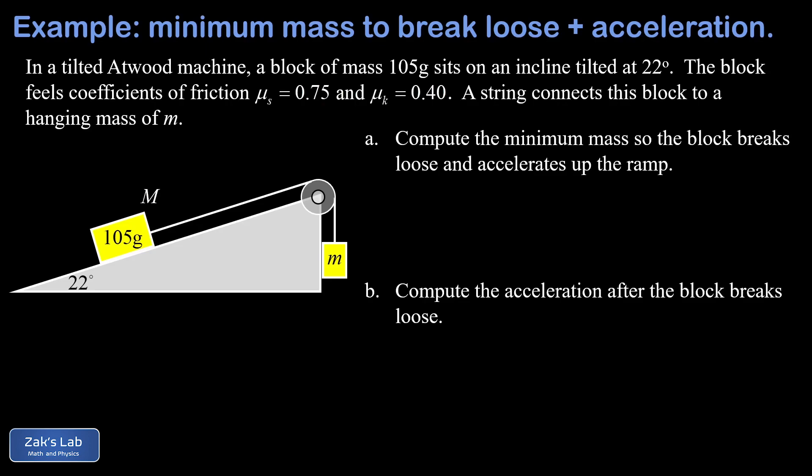Now, what we're going to do is compute in the first part of the problem how big does little m have to be to cause this block to break loose and begin to slide up the ramp. Then in part b, we're going to find the acceleration of the system at that break-loose point.